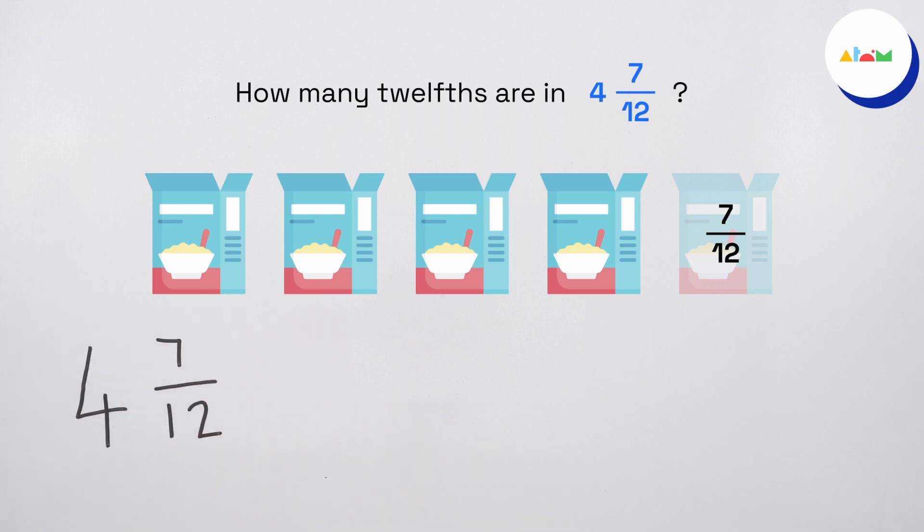To convert a mixed number to an improper fraction, first we multiply the integer by the denominator. Four times twelve equals forty-eight. Four wholes are equal to forty-eight twelfths.